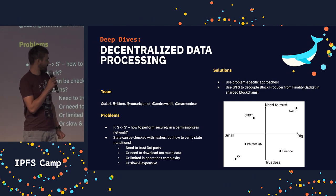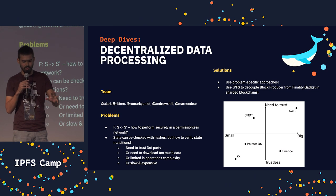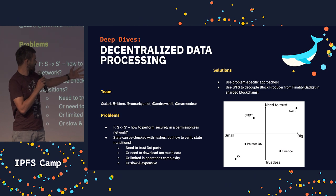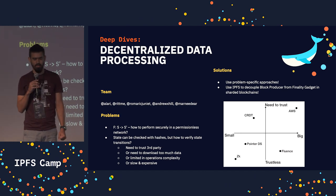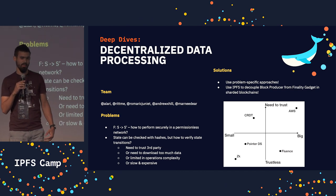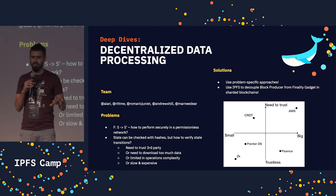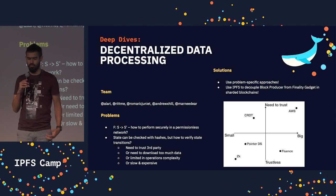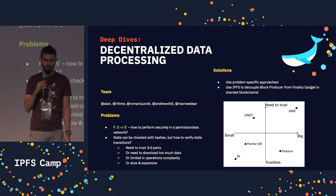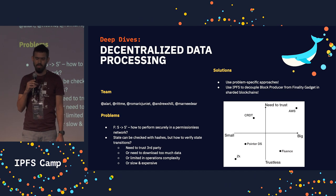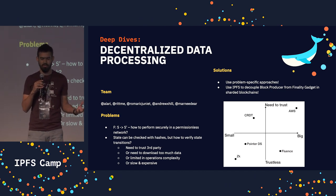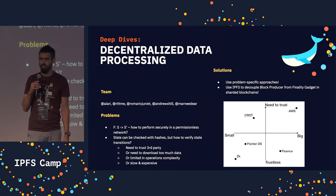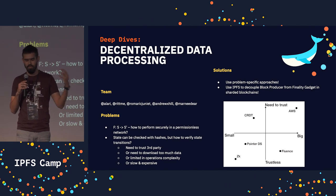We discussed all the common solutions like CRDT and pointer-based data structures and so on, and placed them on this picture. For a lot of problems, it's nice to use some of these solutions — for example, for P2P applications, CRDT is probably great. We also discussed another approach of sharded blockchains with the decoupling of block producer and finality gadget, and how IPFS could help with it, storing blocks and delivering them between the block producer and finality gadget.